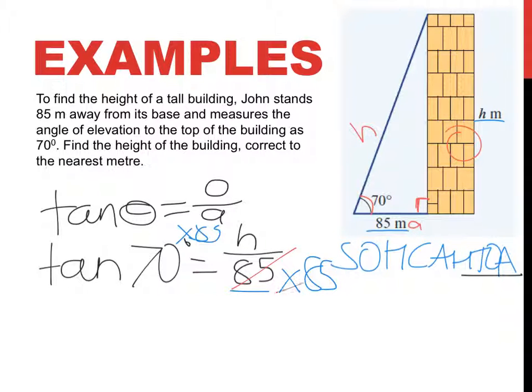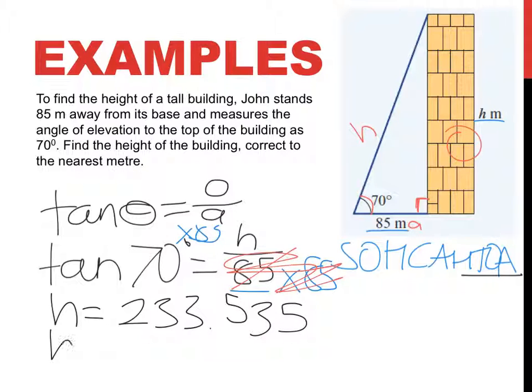So H is going to be equal to tan 70 times 85. And if I put that in the calculator, I get 233.535. So basically H is going to be equaling 233.54. Now, does that seem right? Well, you're lucky because it is kind of half to scale. If that's 85 there, that's about doubling a bit, yeah. That's seeming about right at about three times almost even.